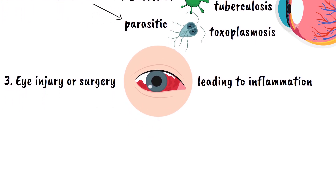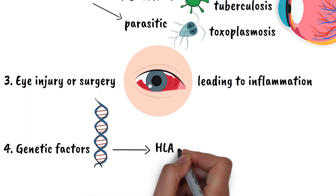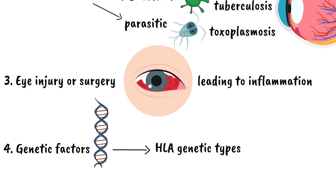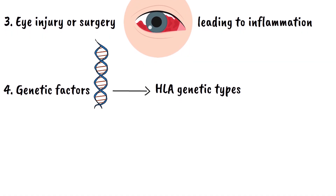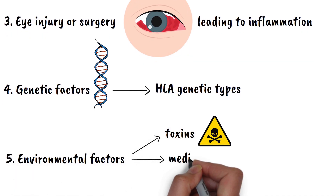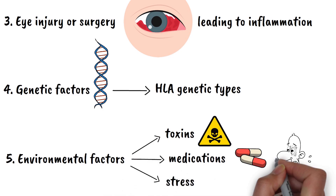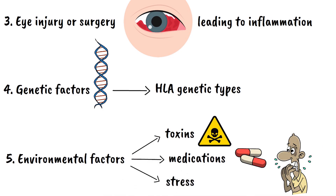Genetic factors also play a role in uveitis susceptibility. Certain genetic markers, particularly those involved in immune system function, can increase your risk. People with specific HLA genetic types are more prone to developing certain forms of uveitis, especially when exposed to particular triggers. Environmental factors can contribute as well — exposure to certain toxins, medications, or even stress can potentially trigger uveitis in susceptible individuals, like a structurally sound house that becomes vulnerable under specific environmental conditions.